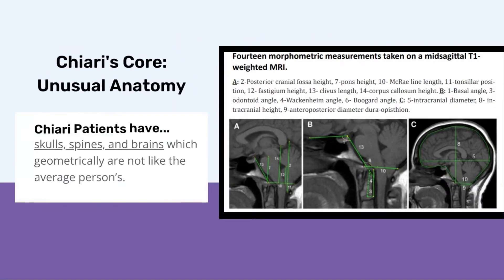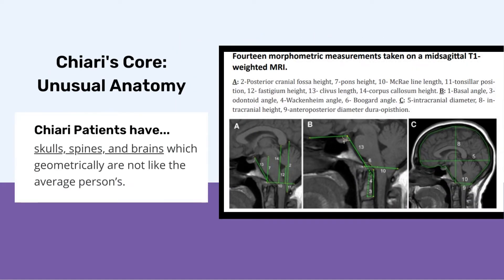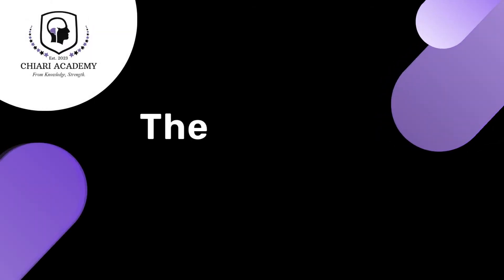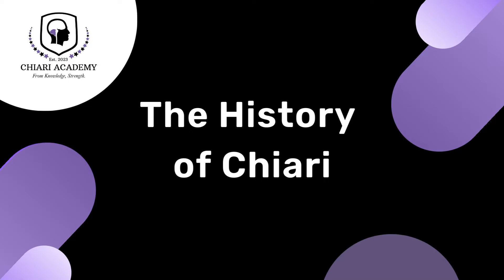So at its core, Chiari is about unusual anatomy. Chiari patients tend to have skulls, spines, and brains which are not like the average person's. Now that we've gone over what Chiari is in general and learned a little bit about the anatomy of Chiari, let's look at the history of Chiari.